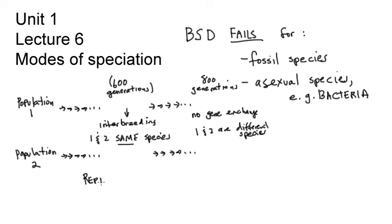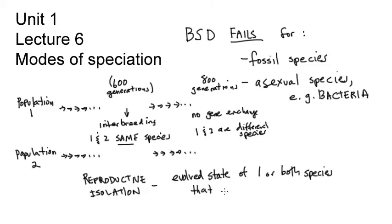Yes, the answer is reproductive isolation, an evolved state of one or both of the species that have just become two distinct species. In this new state the two gene pools are unable to interbreed.